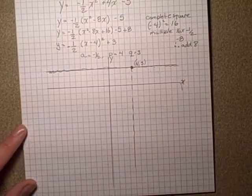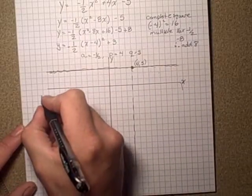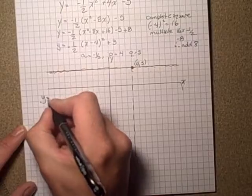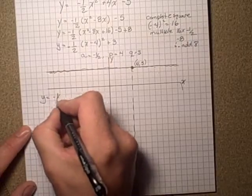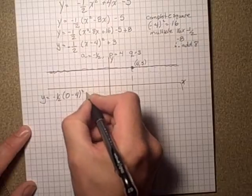In our case, it's much easier to find the y-intercept, so we're going to do that. Y is equal to negative one half times zero minus four all squared plus three.